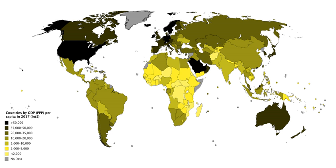The real GDP growth rate for year N equals real GDP in year N minus real GDP in year N minus 1, divided by real GDP in year N minus 1. Another thing that it may be desirable to account for is population growth. If a country's GDP doubled over a certain period, but its population tripled, the increase in GDP may not mean that the standard of living increased — the average person in the country is producing less than they were before. Per capita GDP is a measure to account for population growth.